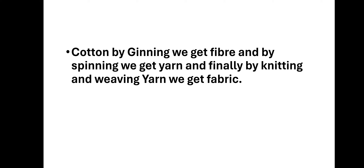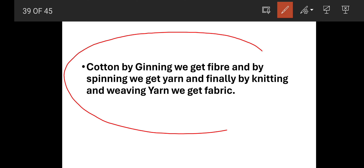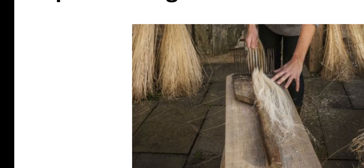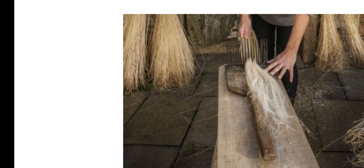So cotton — by ginning we get fiber, and by spinning we get yarn, and finally by knitting and weaving, yarn को हम fabric बना सकते हैं। This is the whole process — यह समझना बहुत important है कि हमें fabric कैसे मिलता है। Flax is also a plant that gives us natural fiber — वही flax seeds जो घर में खाने के लिए आते हैं — उस पेड़ के fibers को इस तरीके से निकाला जाता है।